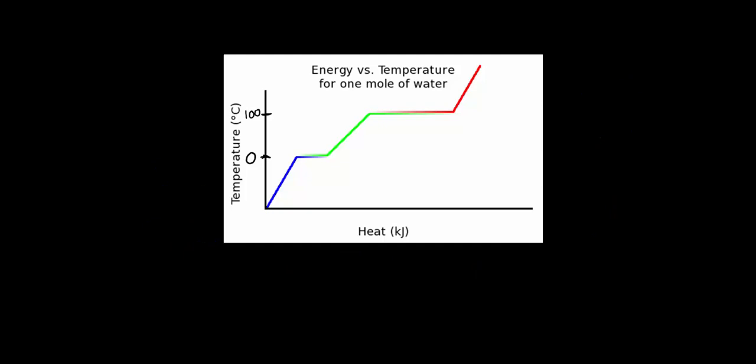This graph shows the temperature change of water as heat is applied to it. We start in the first part of the graph with solid water — ice. The ice is being heated and that is giving kinetic energy to the molecules, causing the temperature of the ice to increase.